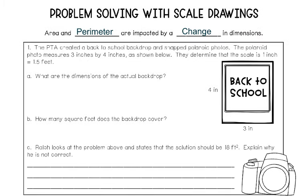It says the PTA created a back-to-school backdrop and snapped Polaroid photos. The Polaroid photo measures 3 inches by 4 inches — those are the dimensions of the photo, shown here in this picture. They determined that the scale is 1 inch for every 1.5 feet. To solve this problem, we're going to be using proportions and using our scale factor as one of those proportions.